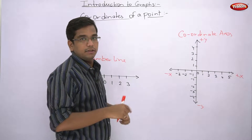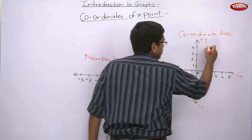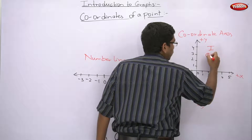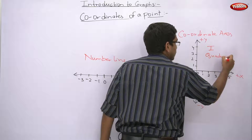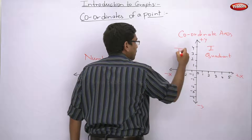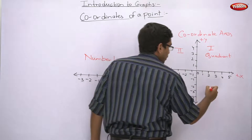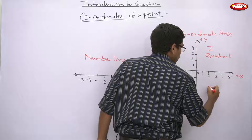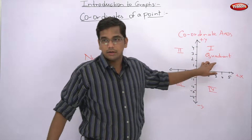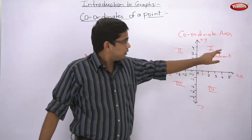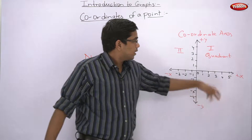These two lines divide the entire figure into four quadrants — four parts. This is your first quadrant, second quadrant, third quadrant, and fourth quadrant. Q-U-A-D-R-A-N-T: quadrant. First quadrant, second quadrant, third quadrant, fourth quadrant.